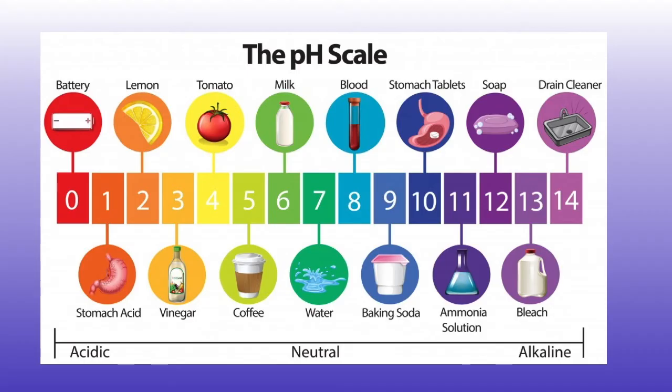The closer you get to 14, the stronger the base you are, like soap, bleach, and drain cleaner. Take a look at the pH level of blood — it's at a pH of 8. If you go past 8 or less than 8, it can bring some serious health problems, potentially even death. The pH scale is full of important information that helps us live healthy lives.